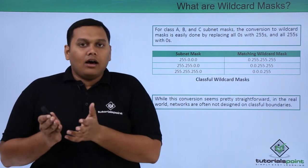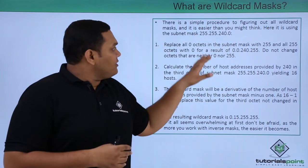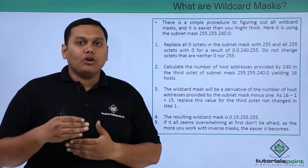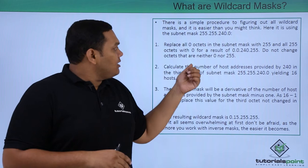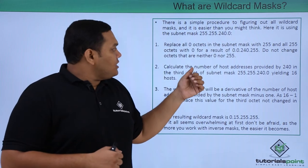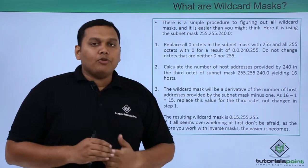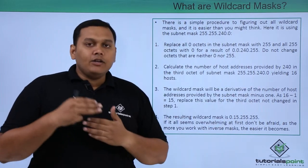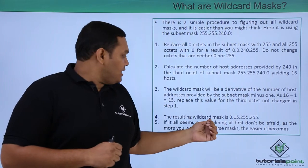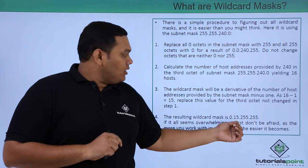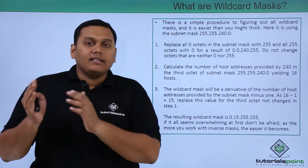Here is the process of deriving a wildcard mask. Given the subnet mask 255.255.240.0, we replace all 0 octets in the subnet mask with 255 and 255 octets with 0, except the middle value 240 in the third octet. This gives 0.0.240.255 initially. However, since 240 means 16 hosts are missing, we subtract 1, giving 15. The resulting wildcard mask becomes 0.0.15.255, where adding those 16 hosts makes the third octet 255 and the second octet 15.